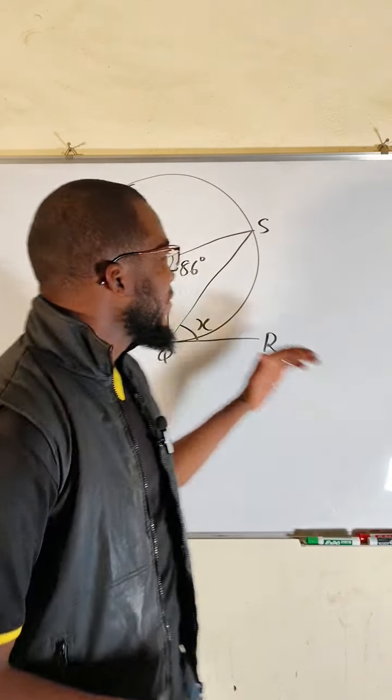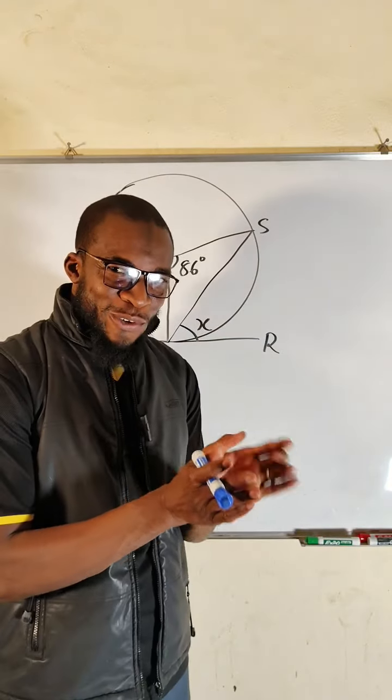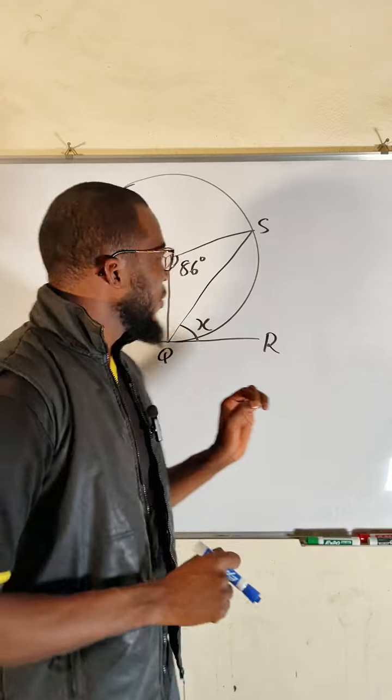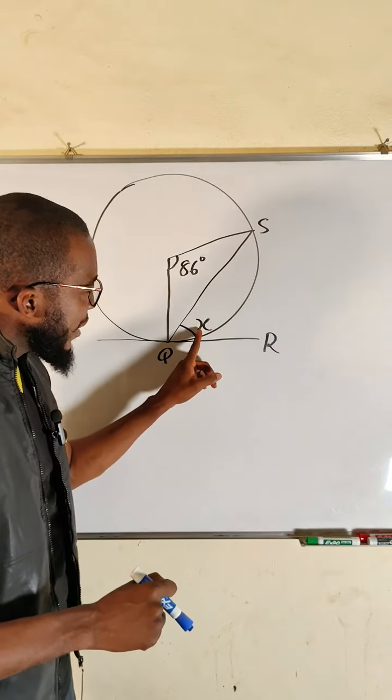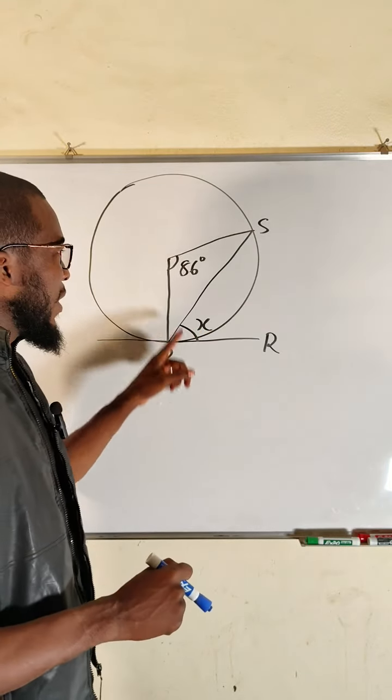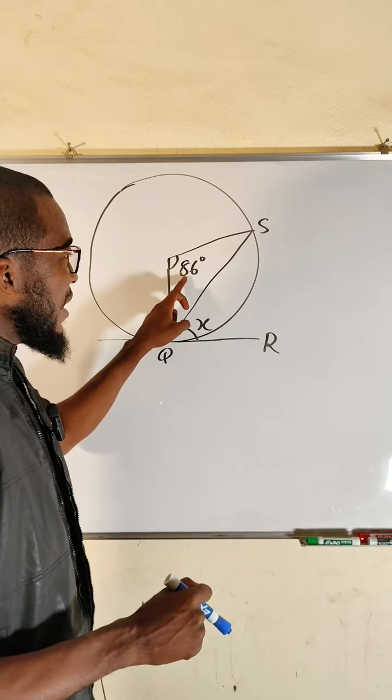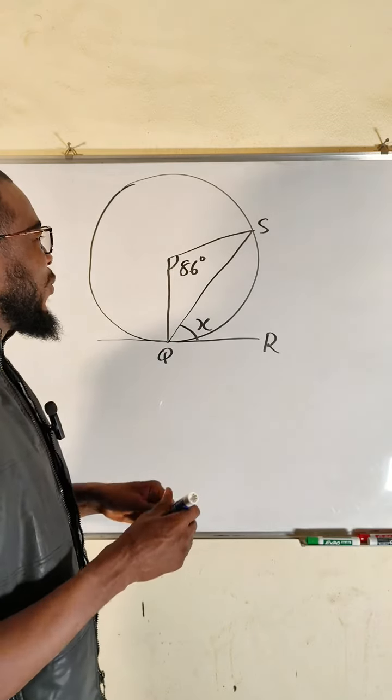Hello, good day viewers. I would like to solve this problem differently from the way Mr. Isomnofo solved it. We want to find this angle x given that this particular angle is 86 degrees.